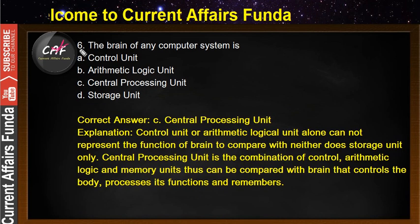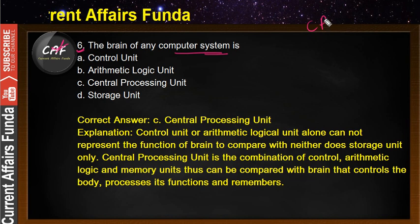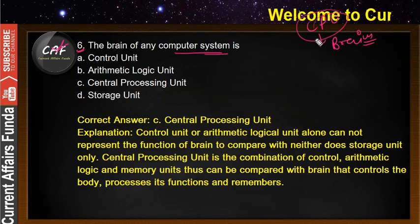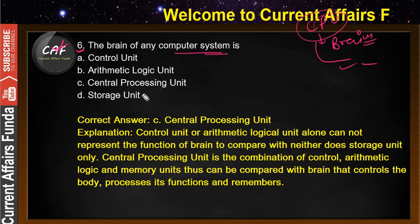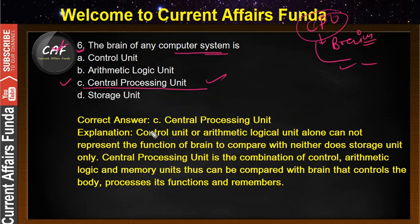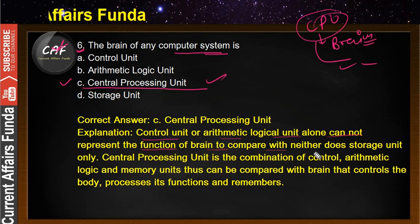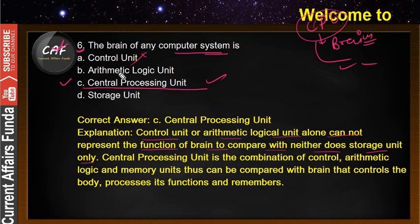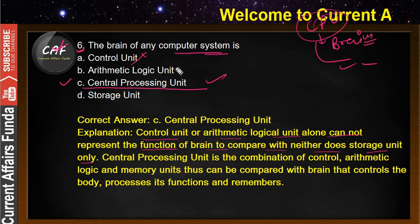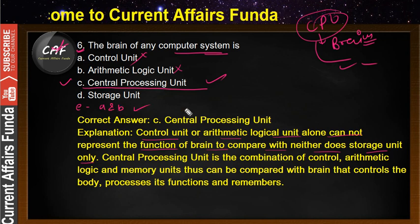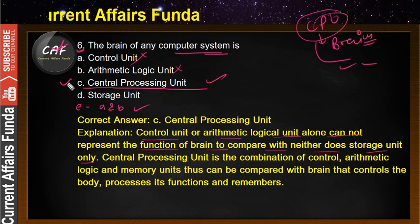Problem number 6: the brain of any computer system is what? The CPU is called the brain of a computer. The motherboard is not the brain — the CPU is. The answer is C, the central processing unit. The control unit or arithmetic unit alone cannot represent the function of a brain, and neither can the storage unit alone, because the control unit is only part of the CPU.